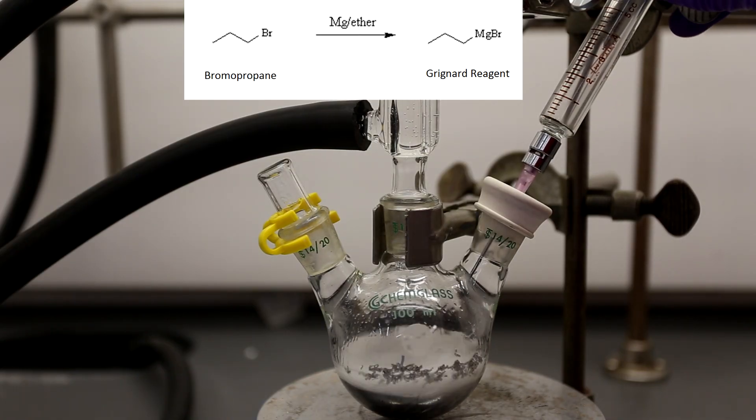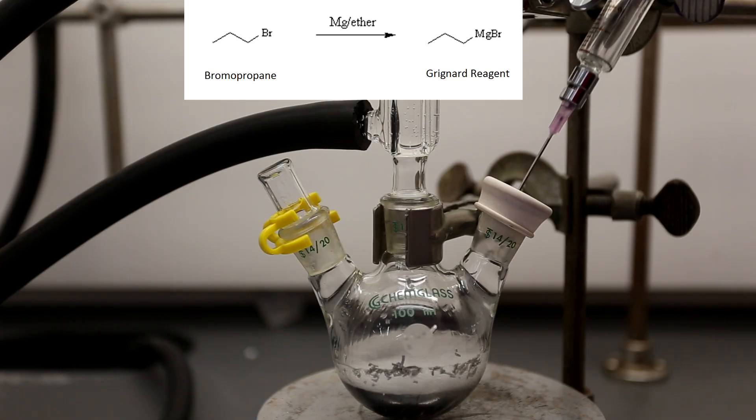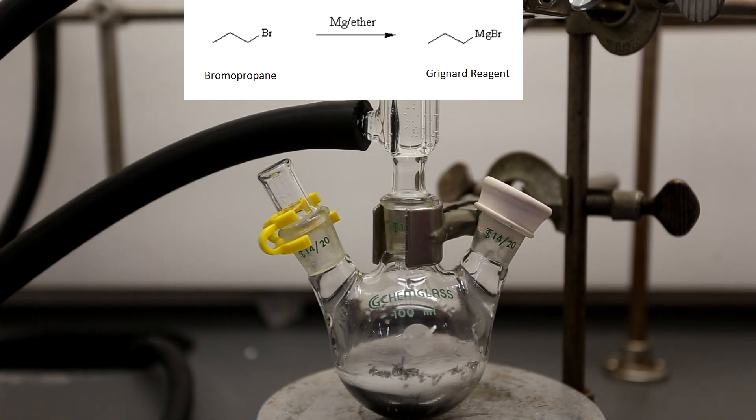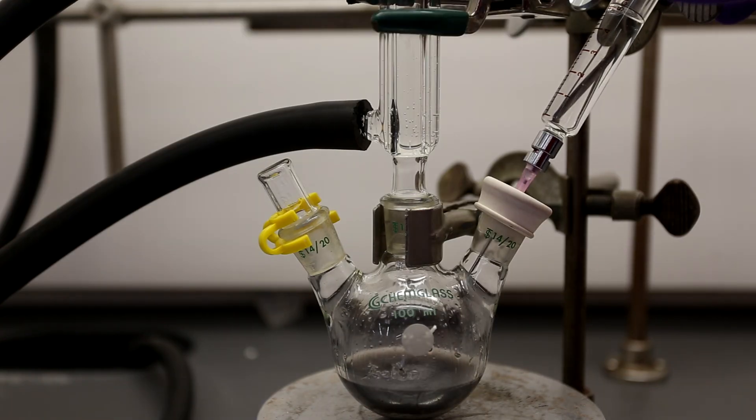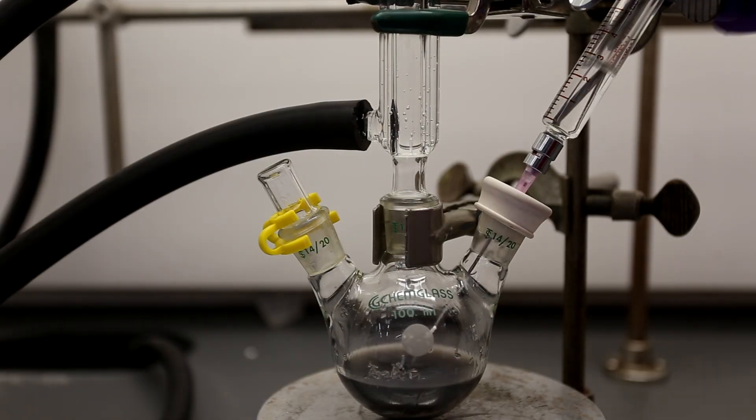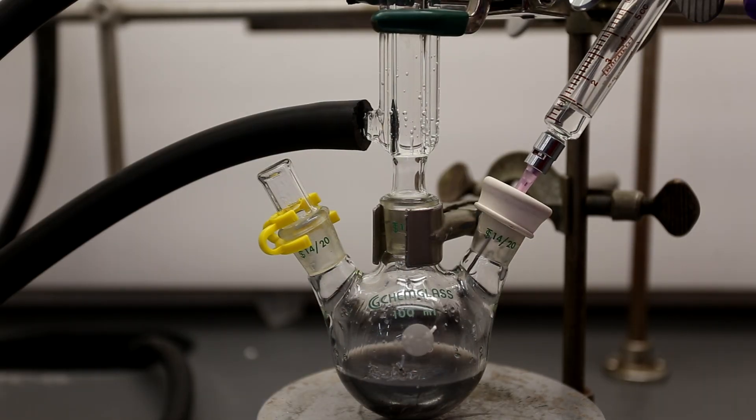The reaction between the bromopropane and the magnesium is shown above. The bromopropane reacts with the magnesium to form the Grignard reagent. This reaction is very exothermic, so it causes the ether to boil, and that's why it's very important to have a condenser column.